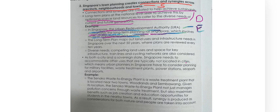Another thing you may worry about: there's another example about Sinoco Waste to Energy Plant as a waste treatment plant. The fourth point mentions that as both a city and sovereign state, Singapore needs to accommodate users that are typically not local in the city. This is just another description to support the factor. It's not important because we've already identified and deciphered what connections and synergies are about. You can use this example to support your idea, but the example above is already enough.